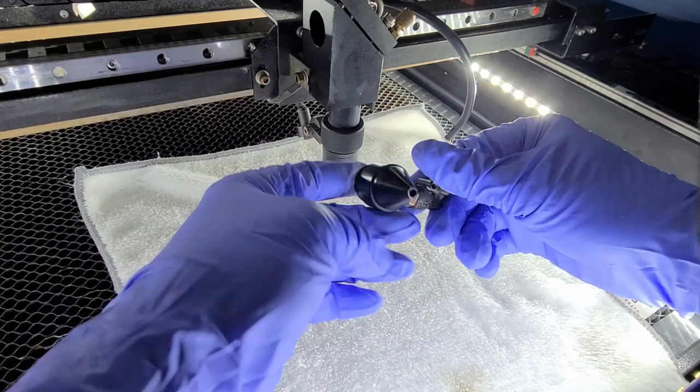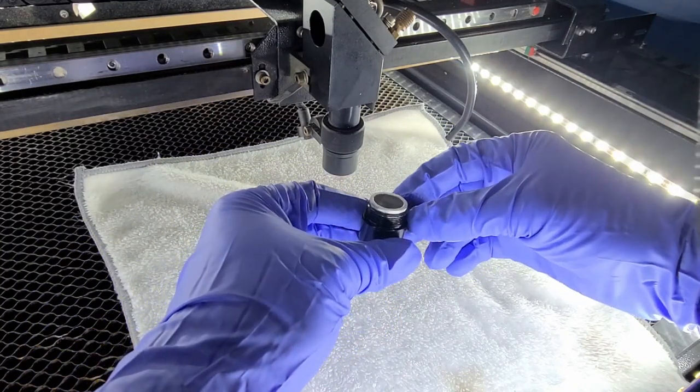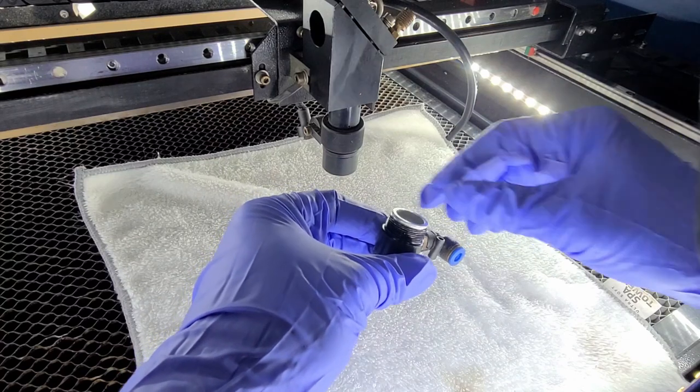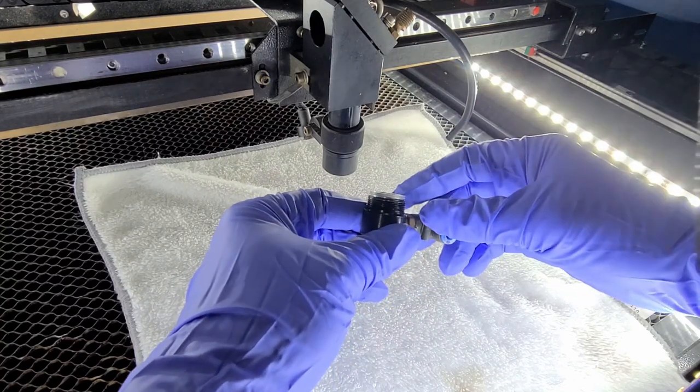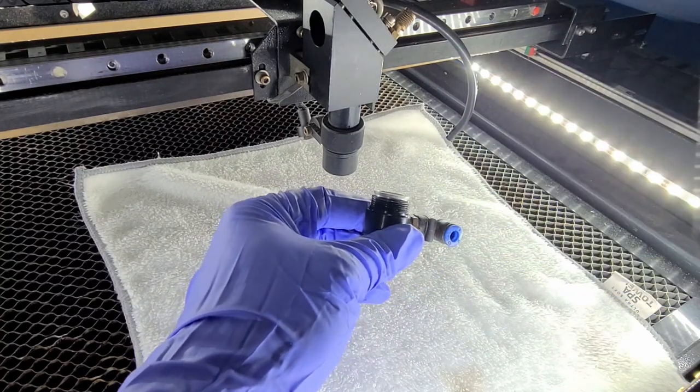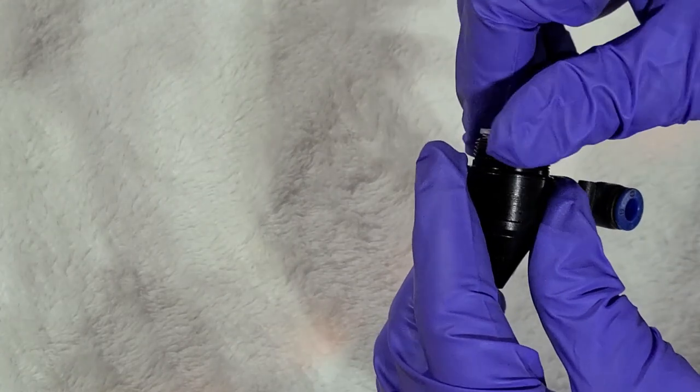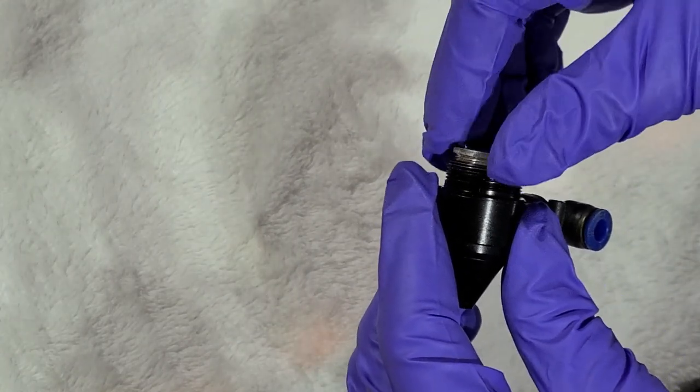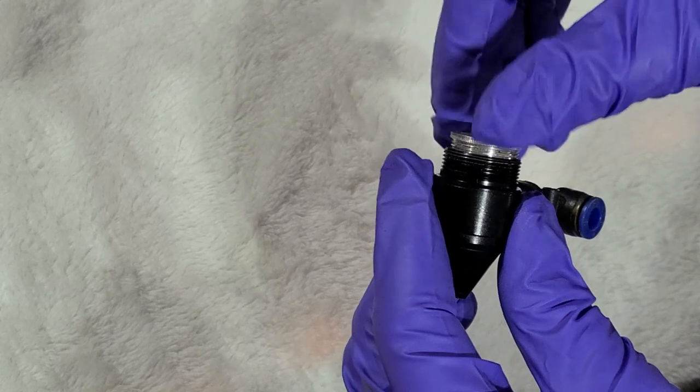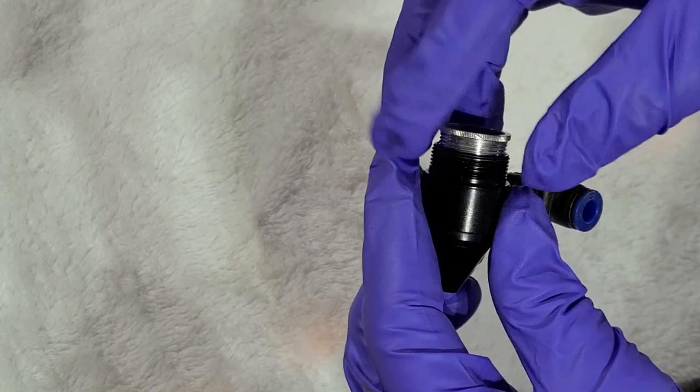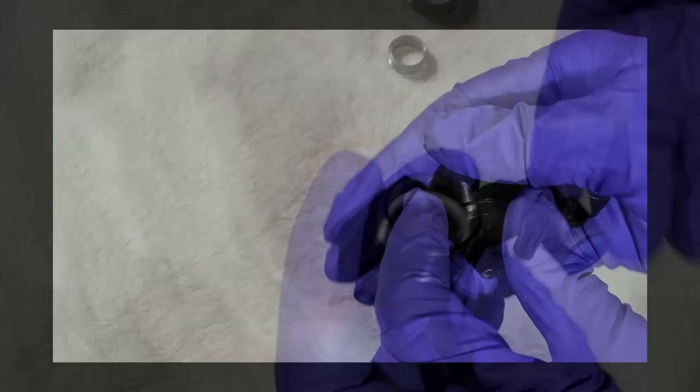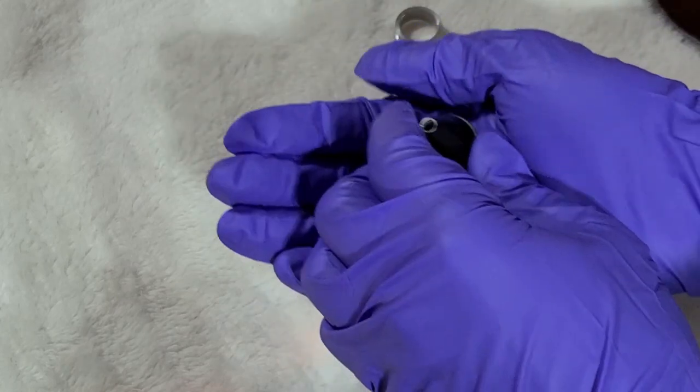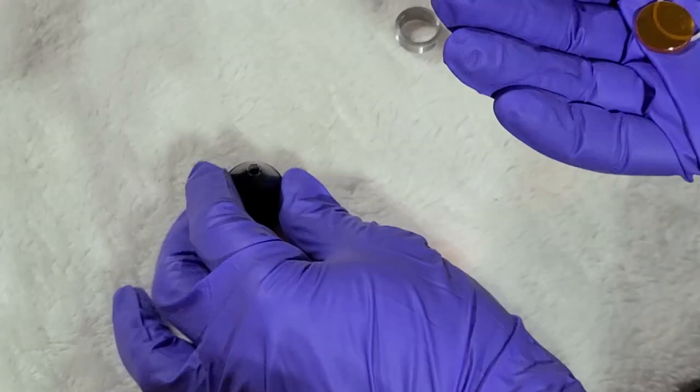Once the nozzle is removed, you'll need to remove the lens. There is a retaining ring at the end of the nozzle that will need to be removed. Next, remove the ring that's holding the lens in place. You will twist it in a counterclockwise motion until it is removed. Holding your hand over the end of the nozzle, turn it over and remove the lens.